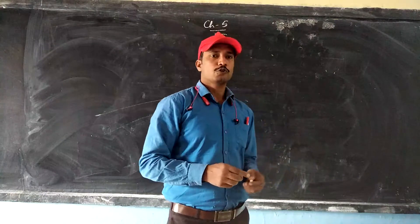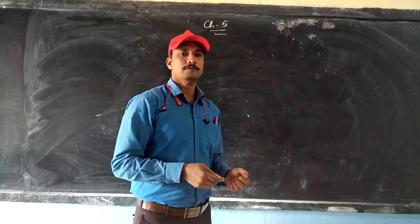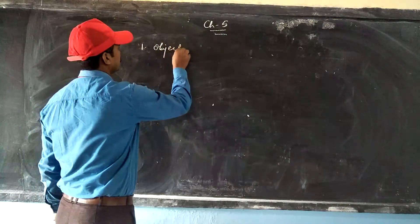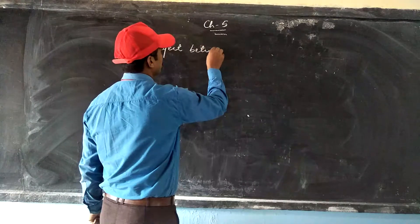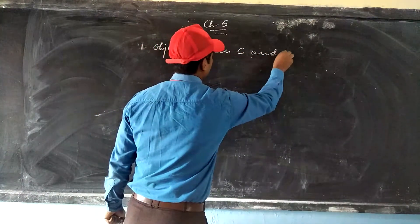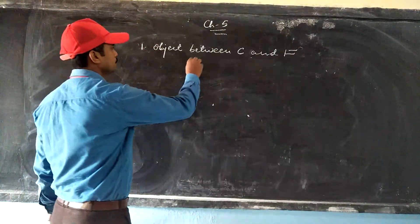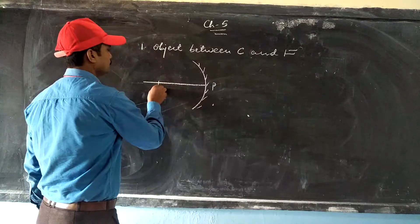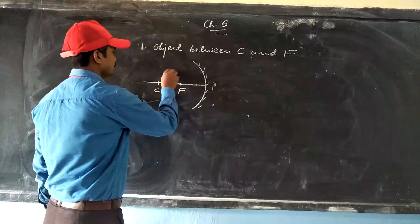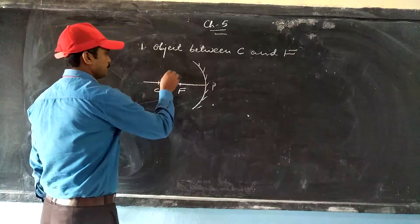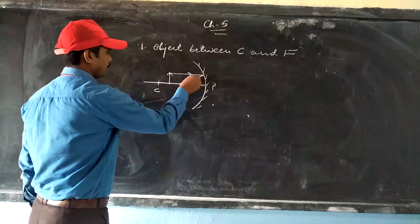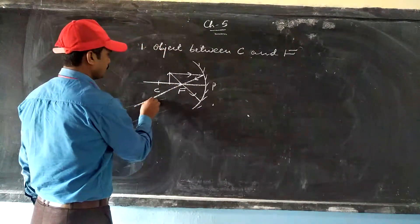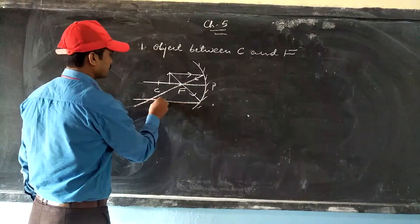Students, I will show you two more cases of concave mirror. The first case: object is placed between the center of curvature and focus. Draw one mirror, mark the pole, center, and focus — that is the position of the object. As per the rules, we take two rays: one ray parallel to the principal axis passing through focus, and another ray passing through the focus.